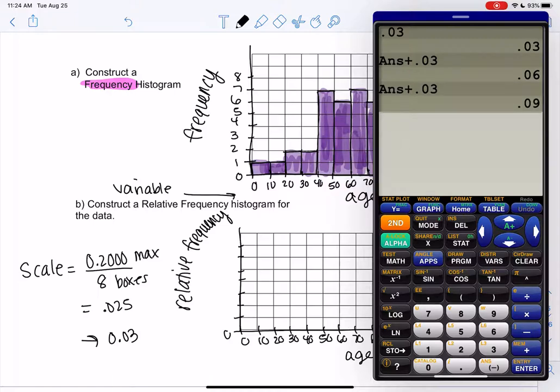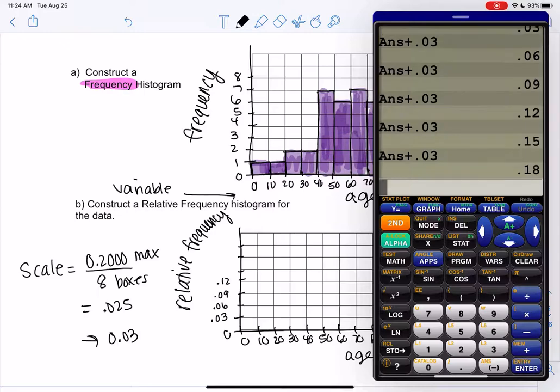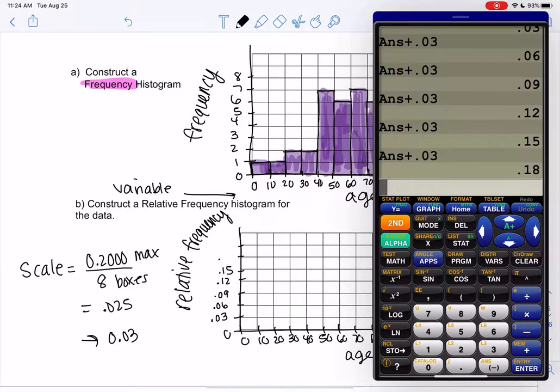So 3, 6, 9 just in decimal form: 0.03, 0.06, 0.09, and then just keep adding 0.03. All right, we're just counting by threes, they're just in a decimal place: 0.21, 0.24. And then if your largest number doesn't fit, that means your scale was maybe too big or your scale was wrong. It's probably too small.